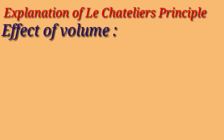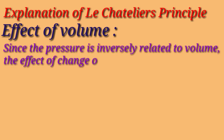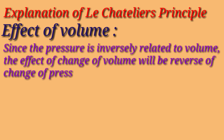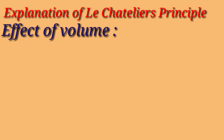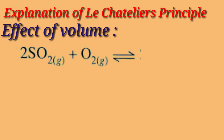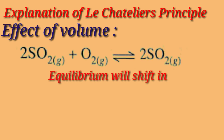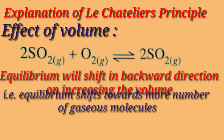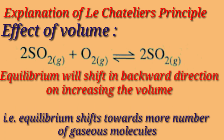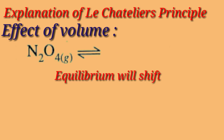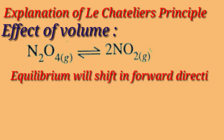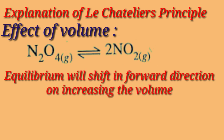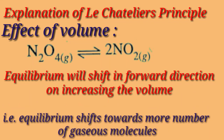Next is the effect of volume. Since pressure is inversely related to volume, the effect of a change of volume will be the reverse of a change of pressure. The equilibrium will shift in the backward direction on increasing the volume — that is, it moves towards the greater number of molecules. For the second reaction, the equilibrium will shift in the forward direction on increasing the volume — that is, equilibrium shifts towards more number of molecules.